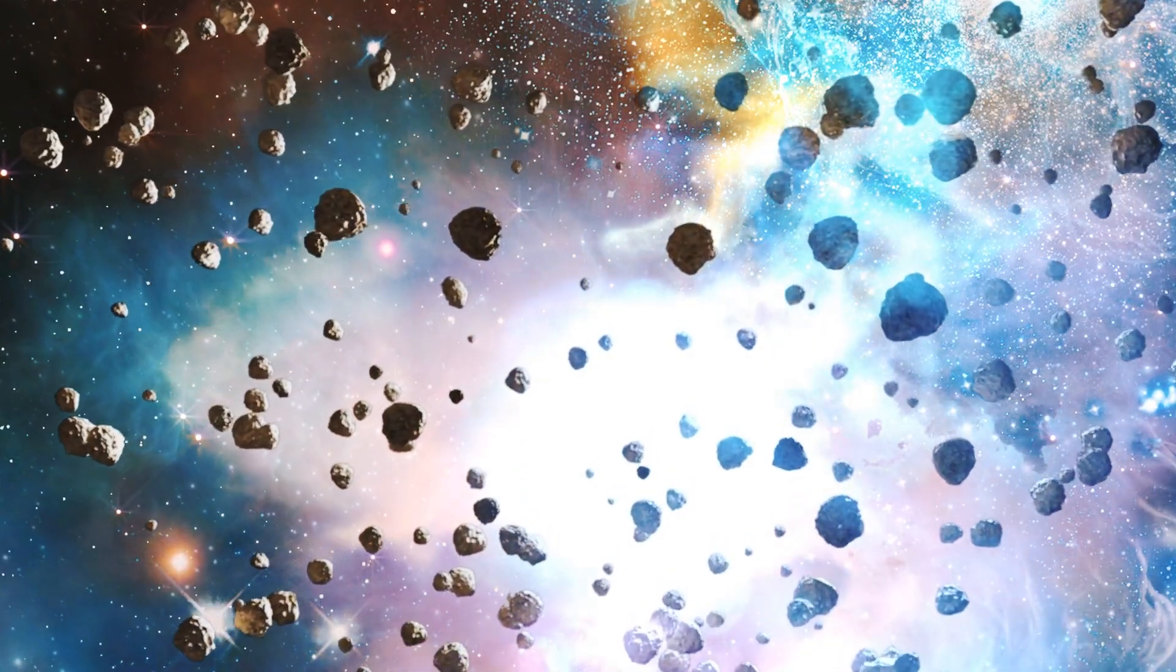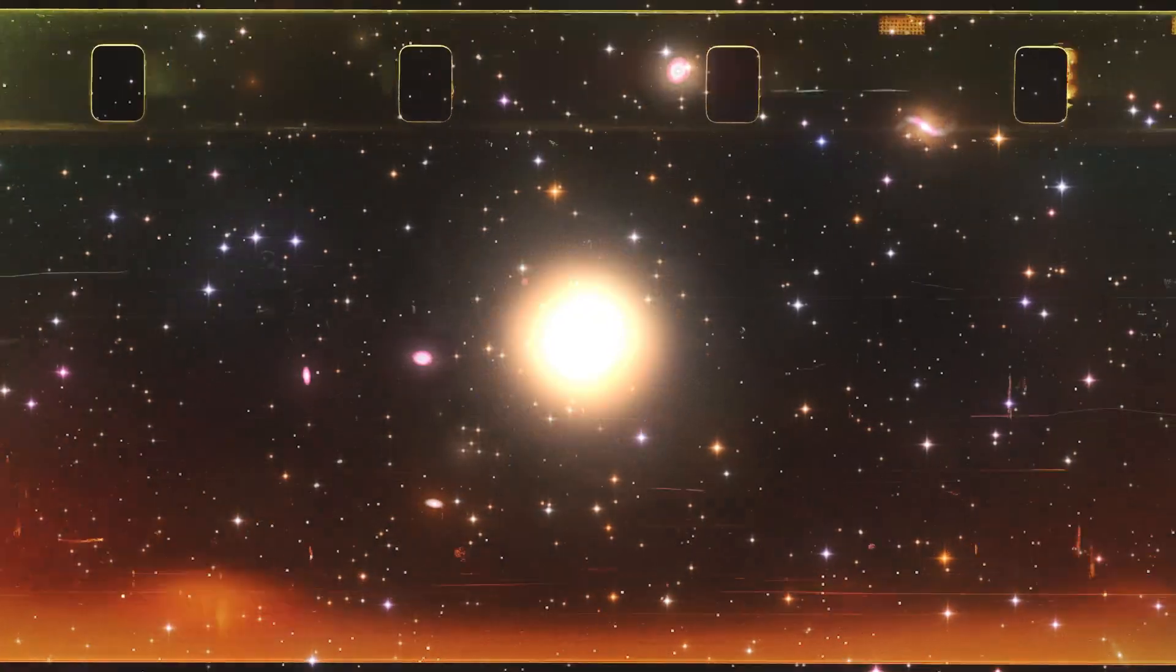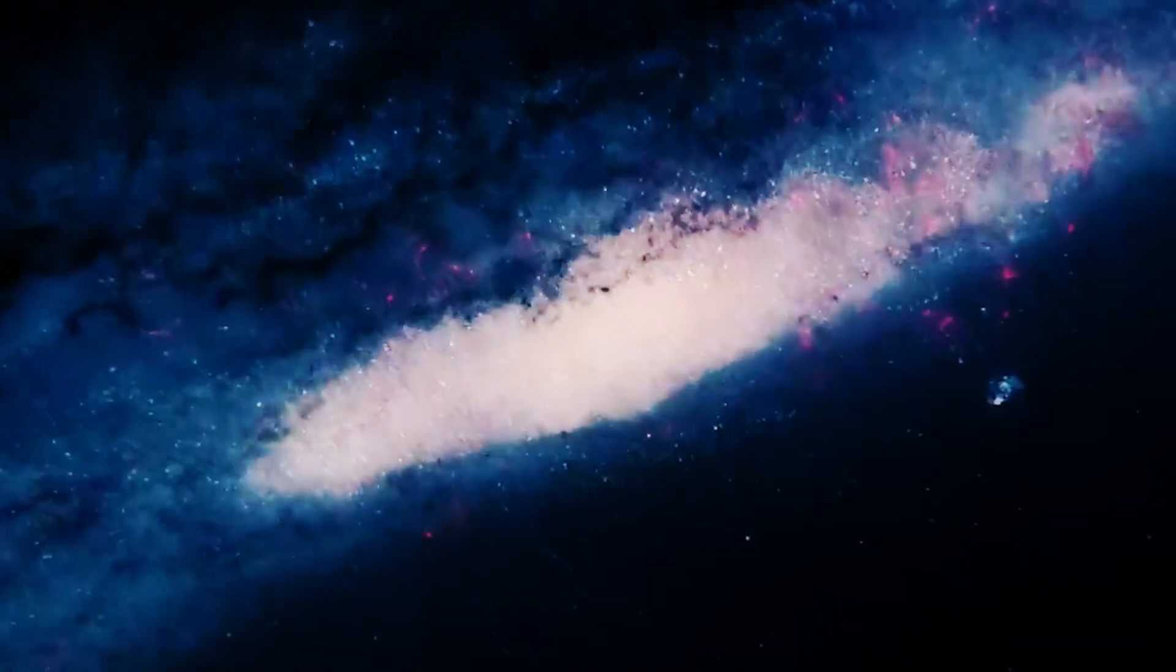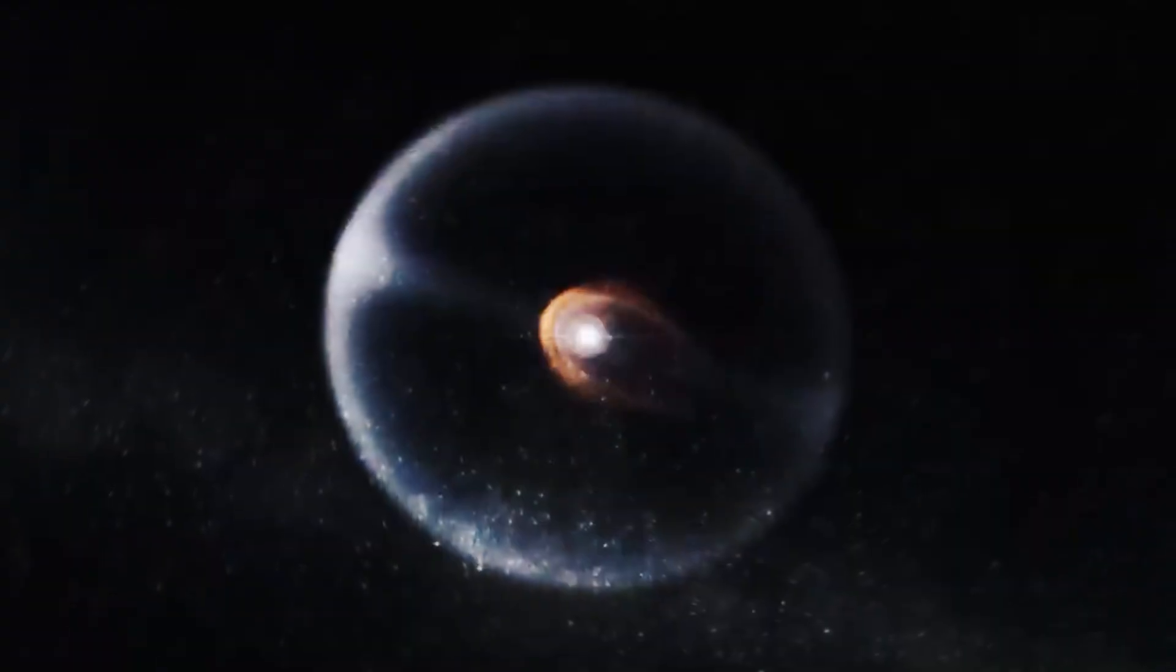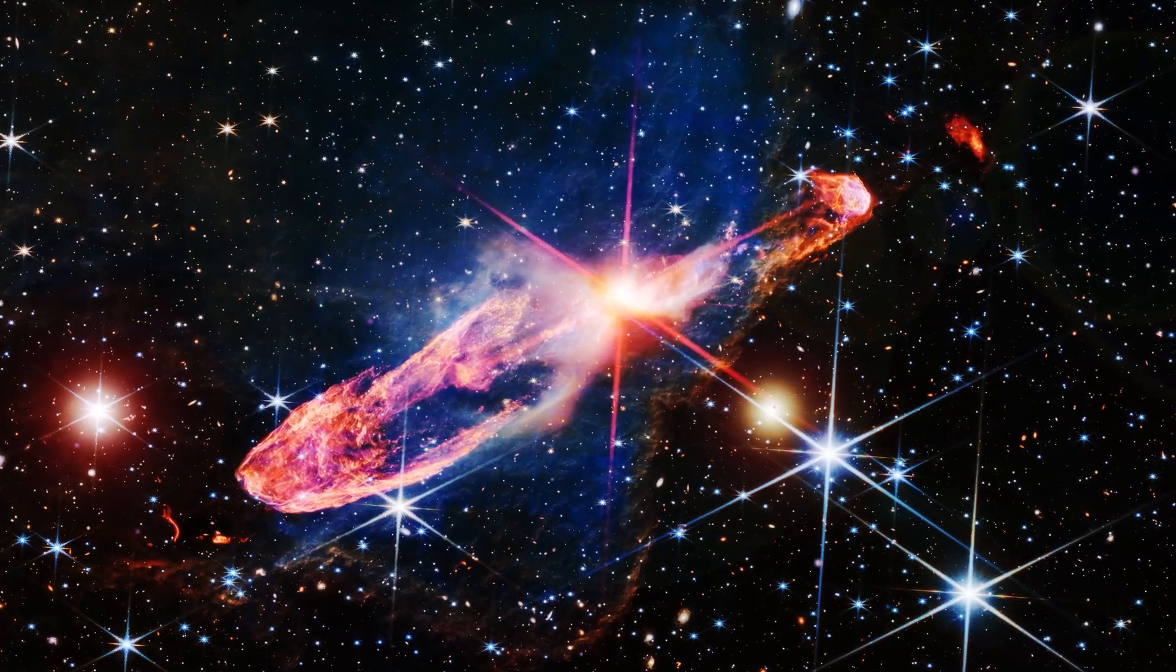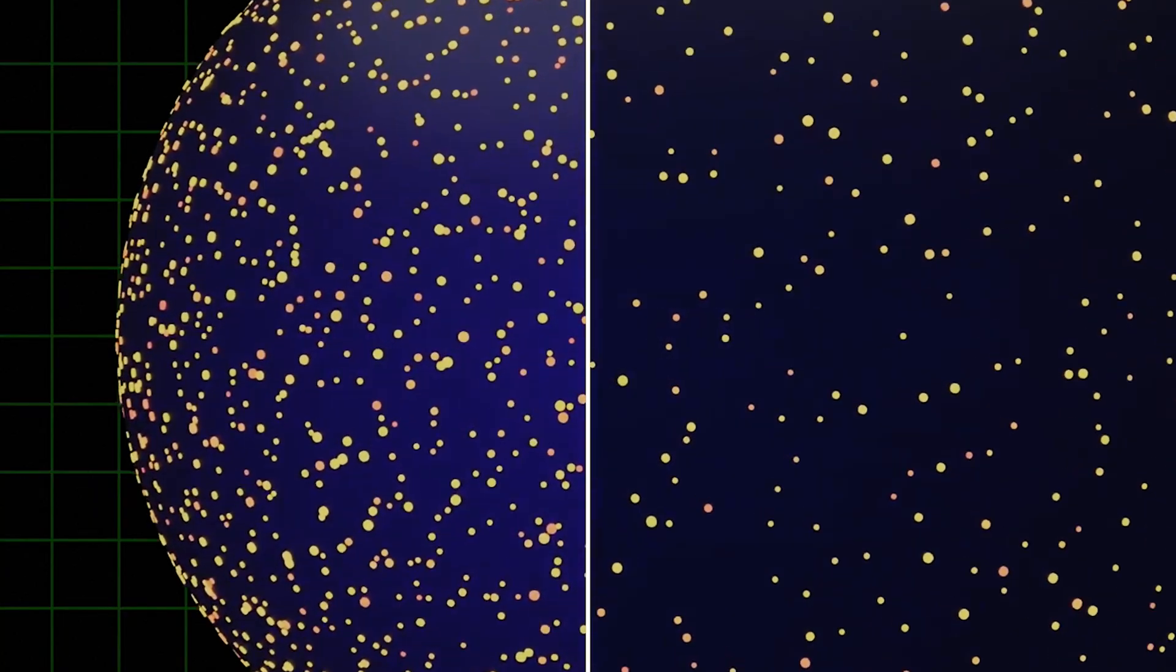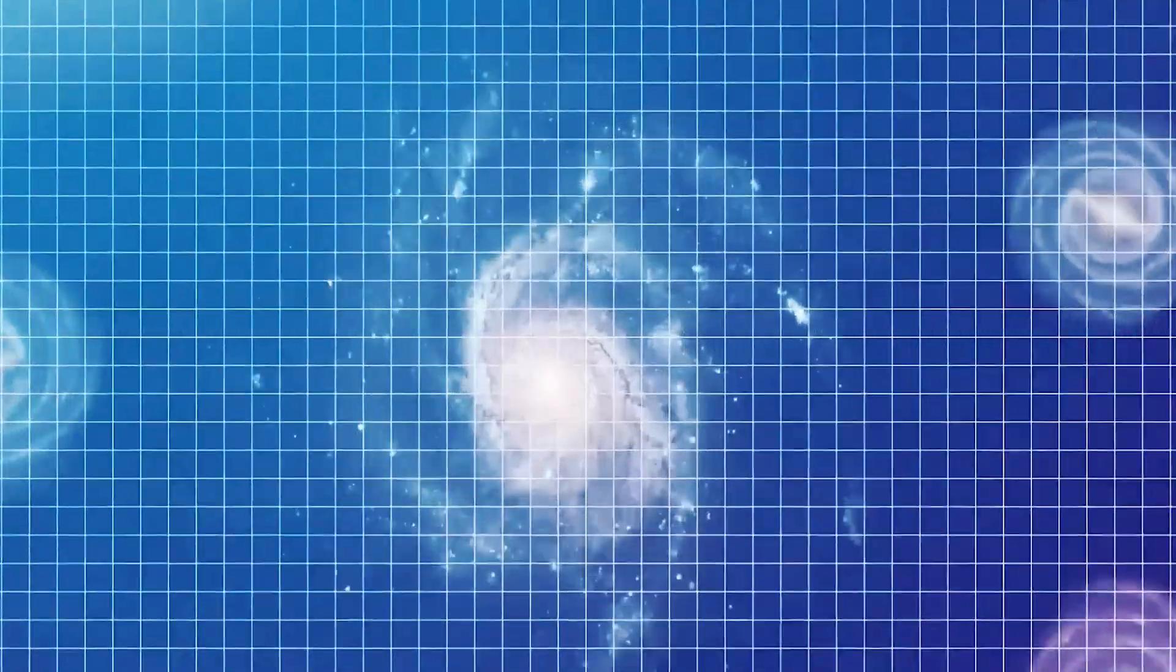And now look deeper into the background. See those tiny reddish smudges, almost lost in the noise? Those aren't stars, they are entire galaxies, billions of light years away. Their light appears red, not because they are inherently red, but because it has been stretched to longer wavelengths by the expansion of the universe itself during its unimaginably long journey to us. It is the fingerprint of cosmic expansion, a phenomenon called redshift.